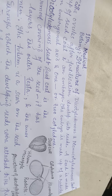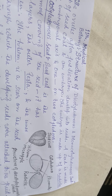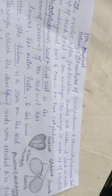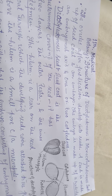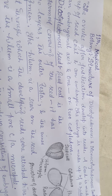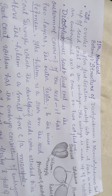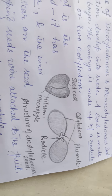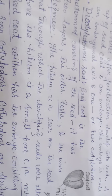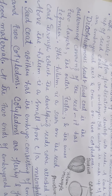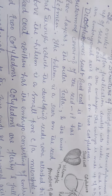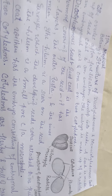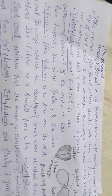One cotyledon in case of monocots or monocotyledons, and two cotyledons in case of the dicots, commonly known as dicotyledons. In dicotyledonous seeds, the seed coat is the outermost covering of the seed. It has two layers: the outer testa and the inner tegmen. The hilum is a scar on the seed coat.